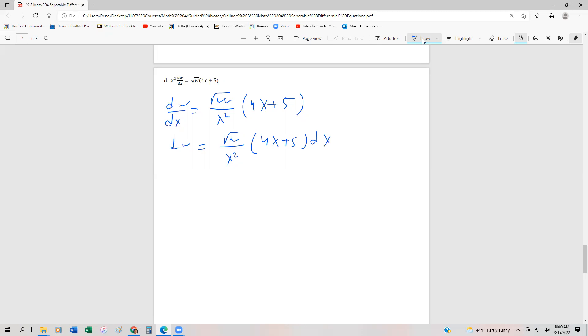And then finally, let's divide both sides by the square root of w. So we get dw over square root of w equals (4x plus 5) over x² dx.